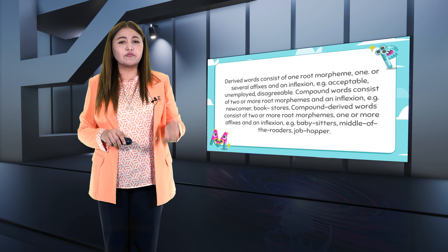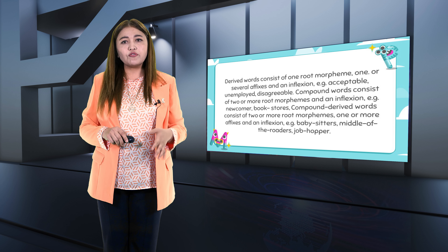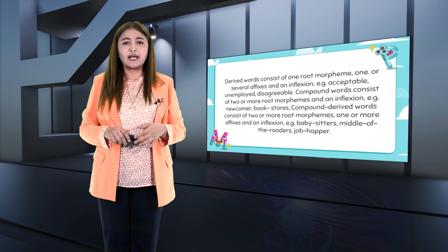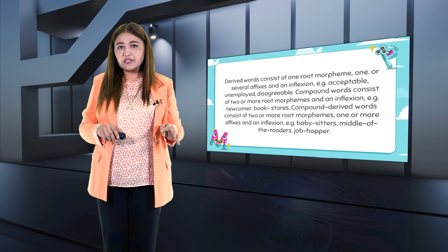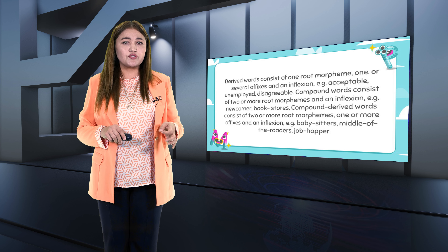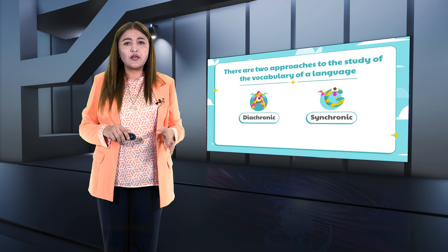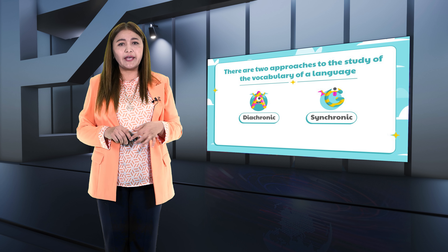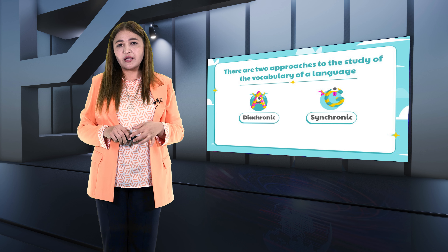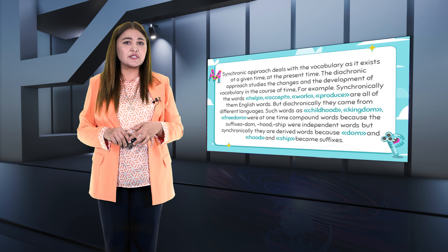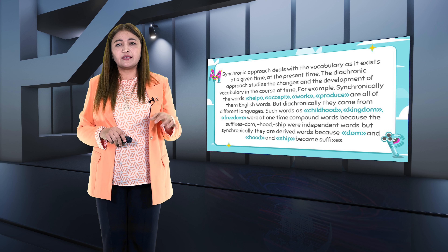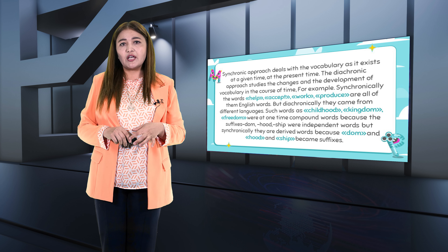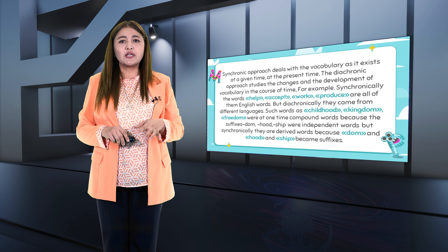Compound derived words consist of two or more root morphemes and inflection, such as babysitters, middle-of-the-roaders, job hoppers. There are two approaches to the study of vocabulary: diachronic and synchronic. The synchronic approach deals with the vocabulary as it exists at a given time, at the present time. The diachronic approach studies the changes in vocabulary over time.